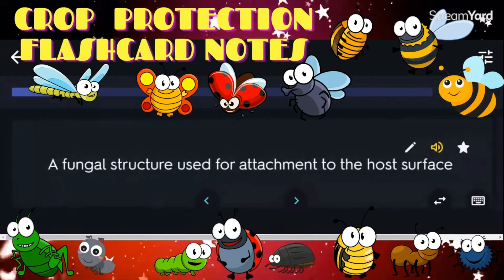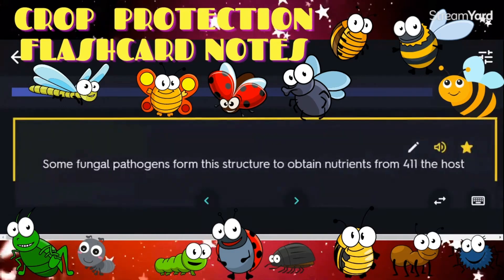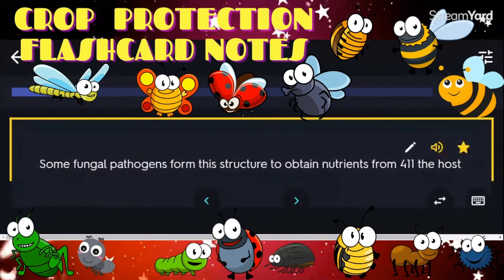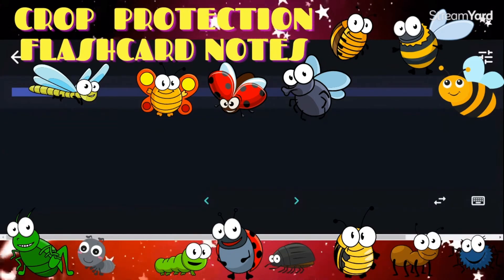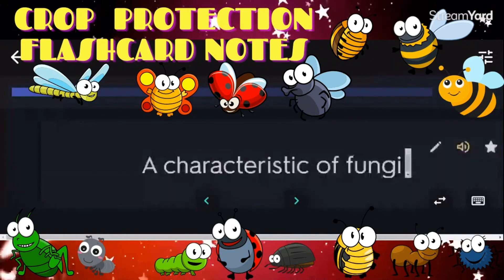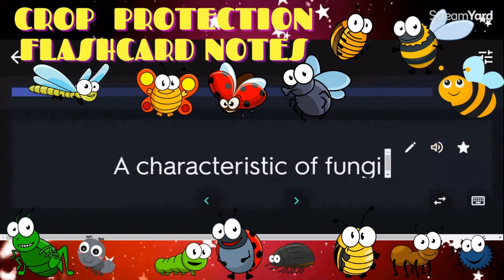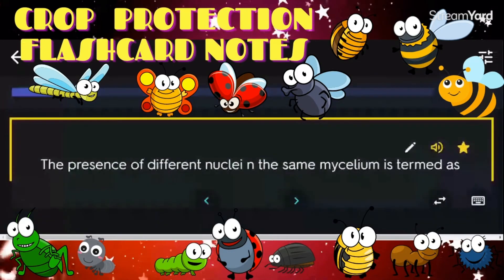A fungal structure used for attachment to the host surface: appressorium. Some fungal pathogens form the haustorium structure to obtain nutrients from the host. In the absence of the plant in the field, fungal pathogens will not survive. A characteristic of fungi: eukaryotic. The presence of different nuclei in the same mycelium is termed heterokaryosis.